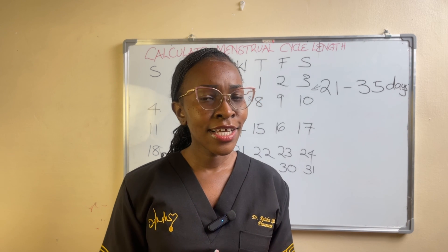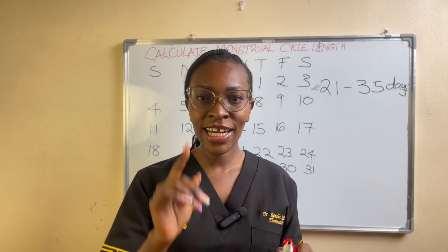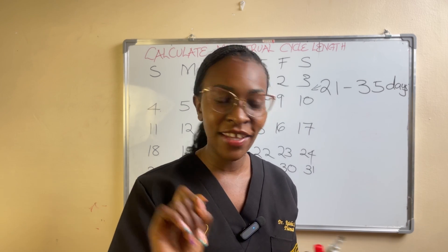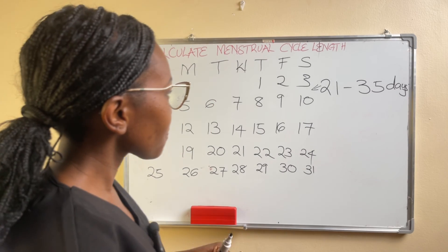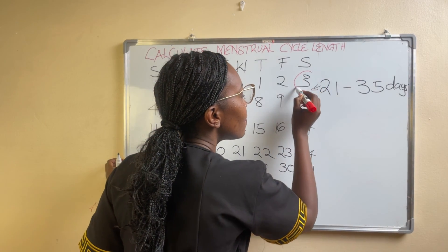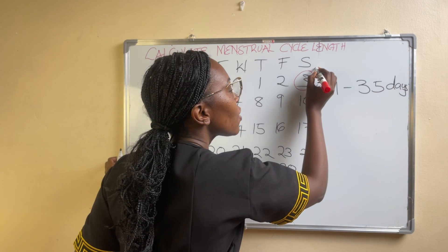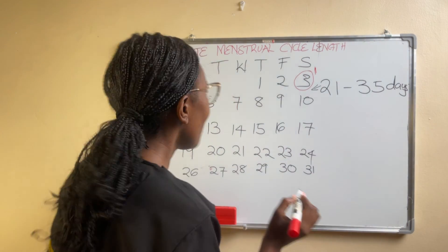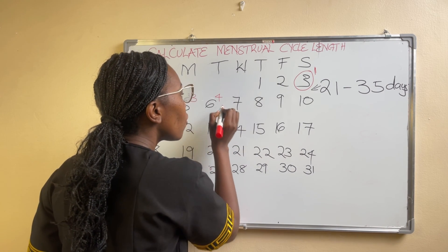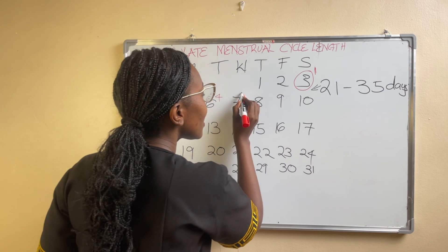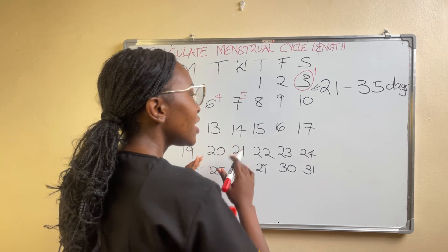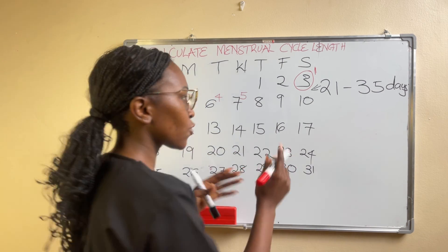So we have a woman here. Let us call her X and let us calculate her menstrual cycle length. This woman received her period on this day — so this was day one of her period. Then day two, day three, day four — she was bleeding. Then day five, and then her period stopped. But then she received her next period.